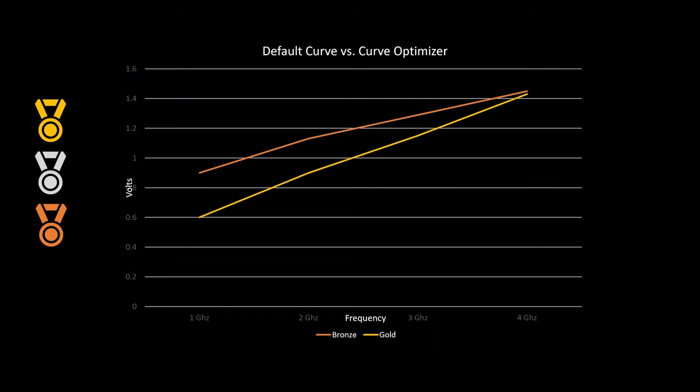That's what AMD is trying to do with their curve. They are setting voltage as if every processor of the 5950X series is in fact a bronze processor. They want to ensure that people have very little, if any, issues that occur with that processor. So they're going to set all of their values and their Precision Boost algorithm as if it's a bronze processor — but they admit there are still silver and gold processors out there. That's what Curve Optimizer is specifically designed to help with.